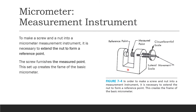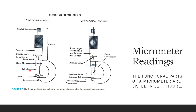To make a screw and nut into a micrometer measurement instrument, it is necessary to extend the nut to form a reference point. The screw furnishes the measure point. Here you can see the reference point, the measure point, the circumferential scale, and the lateral movement scale. This setup creates the frame of the basic micrometer.